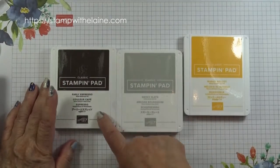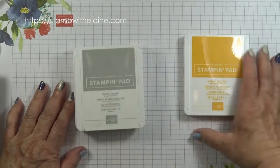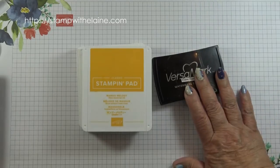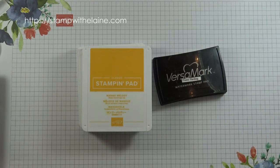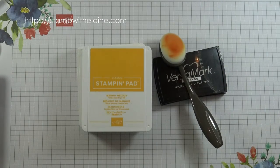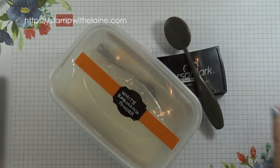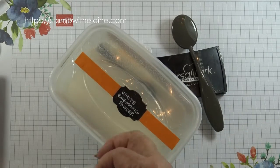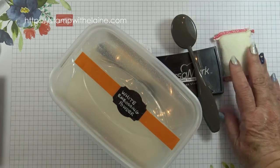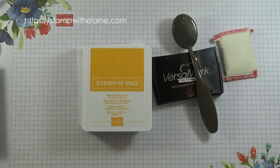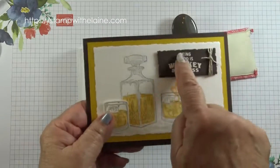The inks I'm using are Early Espresso, Smokey Slate, Mango Melody and Versamark ink plus a blending brush and I'll also need some white embossing powder and if you have a dust buddy then a dust buddy as well and a heat tool because we need to emboss this.